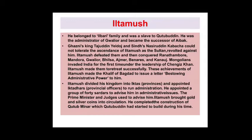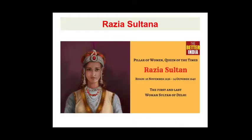Iltamash had many achievements. The Caliph of Baghdad issued a letter bestowing administrative power to him. Iltamash divided his kingdom into provinces and appointed provincial officers. He issued gold and silver coins into circulation, and he completed the construction of the Qutub Minar, which Qutubdin Aibak had started.